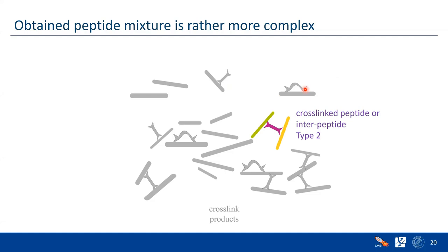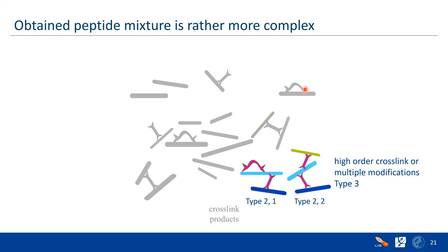Another type is the cross-linked peptide, also called inter-peptide, where we have two different peptides connected by a cross-linker. The mass shift is known for every cross-linker type. In addition to this already complex sample, it can be even more complicated — there could be multiple modifications of higher order, such as combinations of monolink plus cross-link and so on.